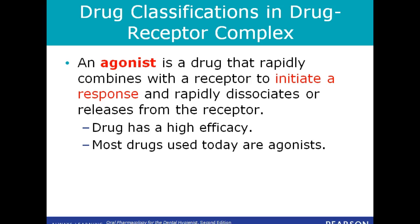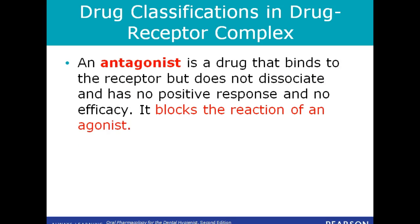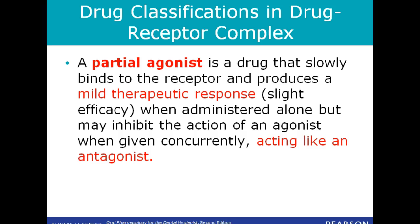An agonist is a drug that rapidly combines with a receptor to initiate a response. An antagonist is a drug that binds to the receptor but does not disassociate, has no positive response and no efficacy, but it blocks the reaction of an agonist. A partial agonist is a drug that slowly binds to the receptor and produces a mild therapeutic response, but it can act like an antagonist by blocking stronger agonist drugs from binding.